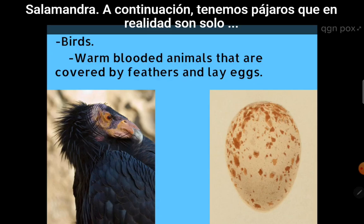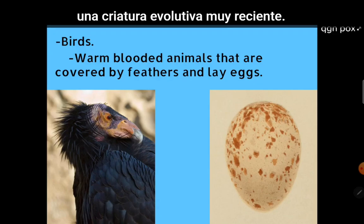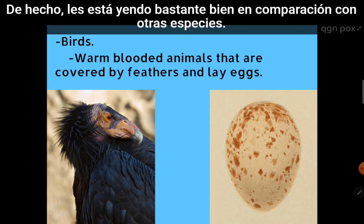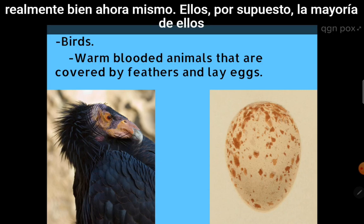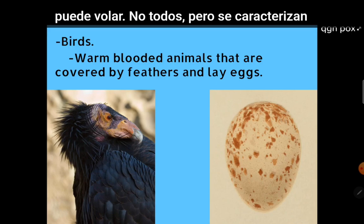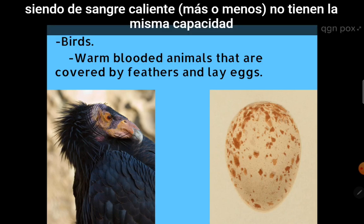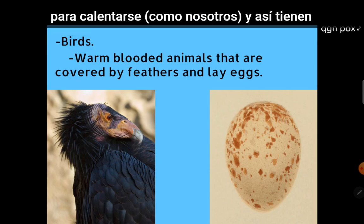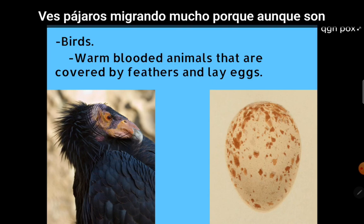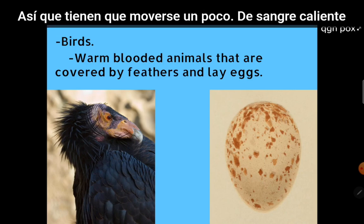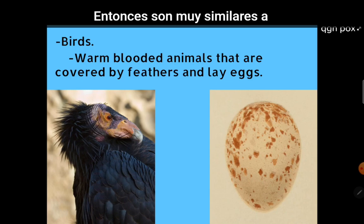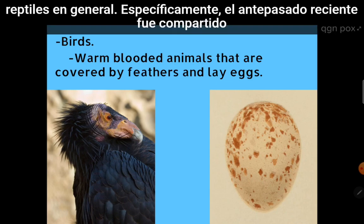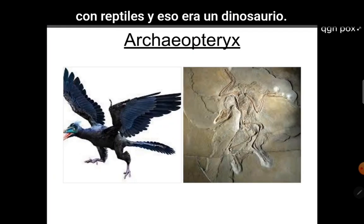Next we have birds, which are really just a very recent evolutionary creature. They very recently came onto the scene — in fact, they're doing pretty well because they're so new, and a lot of prey species are not used to avoiding them. Most of them can fly, and they're characterized as being warm-blooded, sort of. They don't have the same capacity to heat themselves up like we do, so they do have to migrate a lot. They are warm-blooded animals that lay eggs, very similar to reptiles. Their recent ancestor was shared with reptiles — that was a dinosaur. They actually came from the Archaeopteryx.